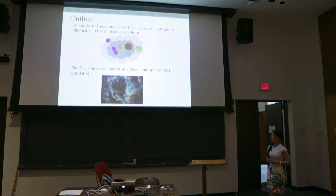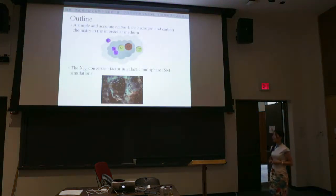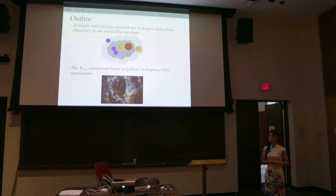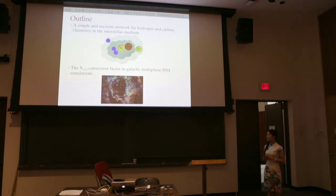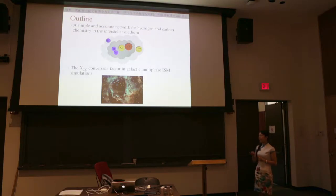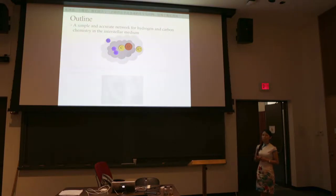This talk really has two parts. Part one is about a simple and accurate chemistry network that we propose for simulating hydrogen and carbon chemistry in star-forming environments and in the ISM. The second part is to apply this chemical network to study the interstellar medium, specifically the XCO conversion factor in galactic multiphase ISM simulations. I'll try to explain a little bit more about what these words mean.